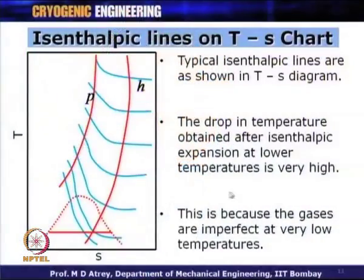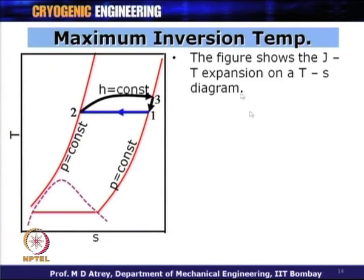A mixture of gas plus liquid, or complete liquid, is normally preferred to get more cooling effect when subjected to JT expansion. However, near room temperature, if the gas is expanded from state 2 to 3, it results in heating because the initial state is above the inversion temperature. So one should ensure the initial state lies below the inversion temperature before isenthalpic expansion.